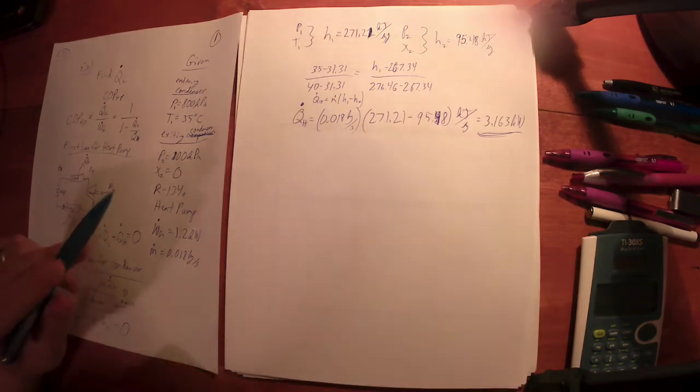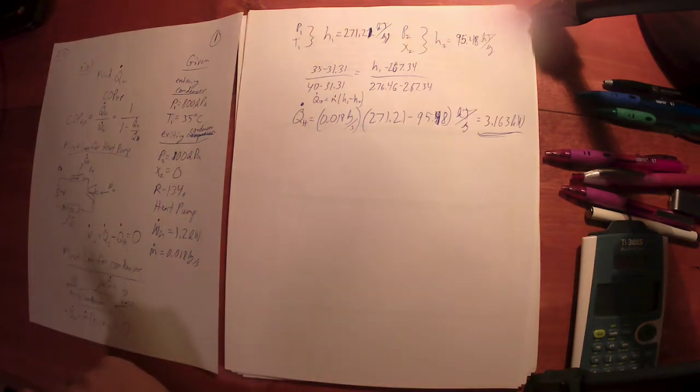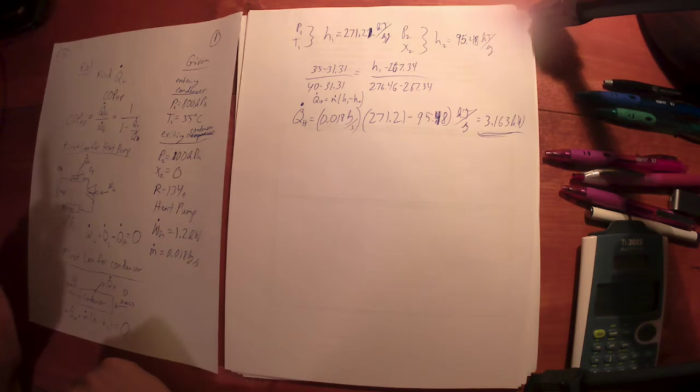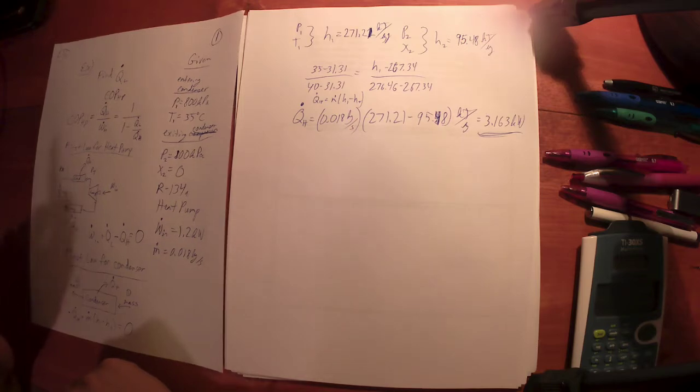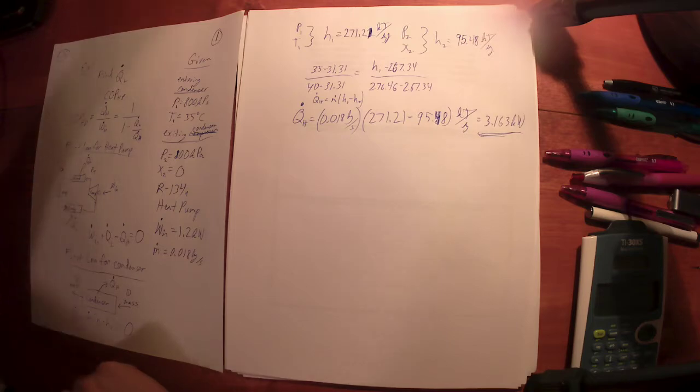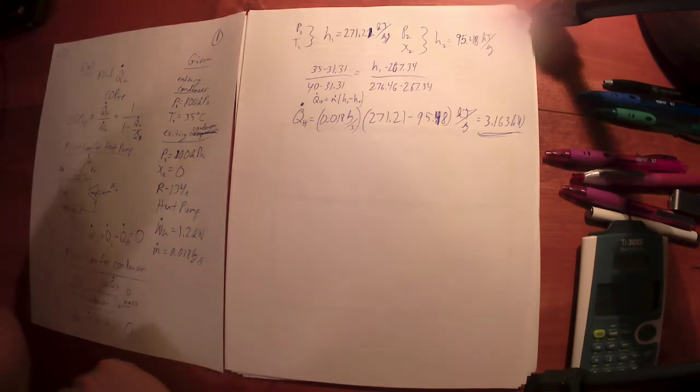Okay, so my mass flow rate times Delta H gives me Q dot H. Now I've got a number. Now is that my answer? What the heck are we looking for? It's not a good problem unless you have to ask yourself at least more than once what the hell are we looking for.